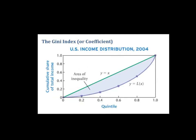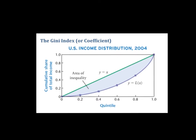To talk about the Gini index or Gini coefficient: the Gini index is a number between 0 and 1, while the Gini coefficient is between 0 and 100 — it's just whether you write it in decimal or percent form. We have our Lorenz curve, which represents the actual distribution of income based on quintiles.